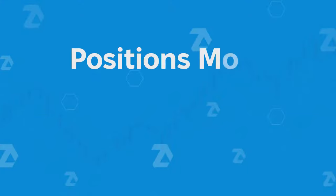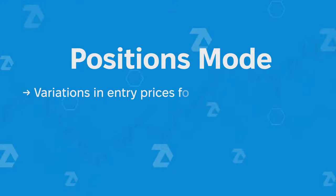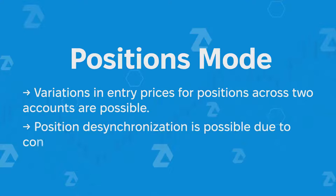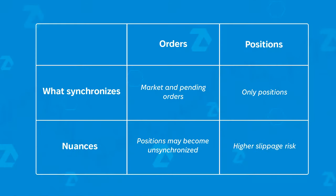It's worth mentioning that variations in entry prices for positions across different accounts are possible. Additionally, position desynchronization may occur due to connector operations on different exchanges. Which mode to choose — positions or orders copying — is up to the user, who should consider the specifics of their strategy. It's important to mention that the module's functionality is closely tied to nuances that can arise from varying prices and liquidity across different accounts.